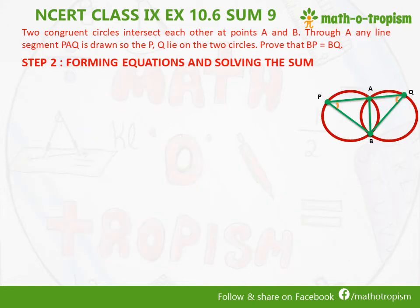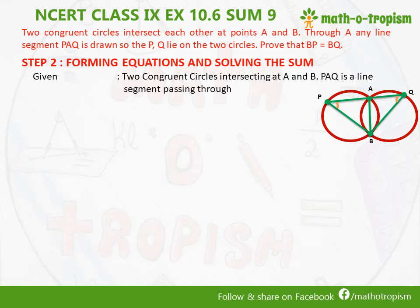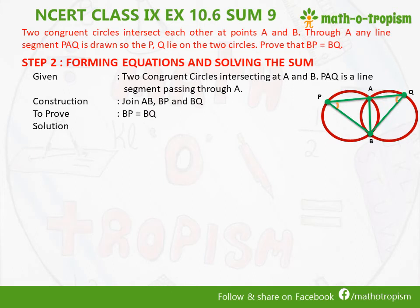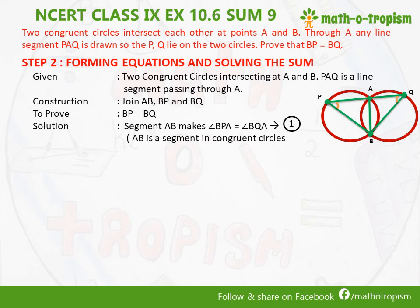Forming equations and solving the sum. We have given two congruent circles intersecting at A and B. PAQ is a line passing through A. Construction: we are going to join AB, BP and BQ. We need to prove that BP is equal to BQ. We start with segment AB which makes angles BPA and BQA, and both are equal. This is equation 1, because line segment AB is in both the congruent circles and angles on the same segment are equal.